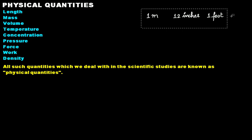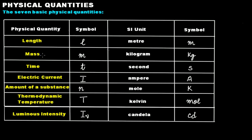We use SI units, which we'll discuss in detail in our next video lecture. But here are the basics: there are seven basic physical quantities — length, mass, time, electric current, amount of a substance, thermodynamic temperature, and luminous intensity.